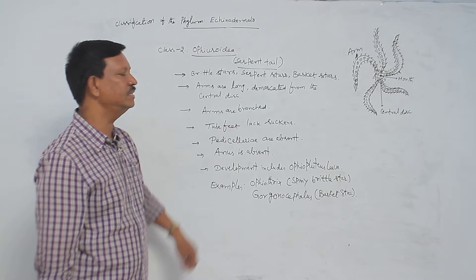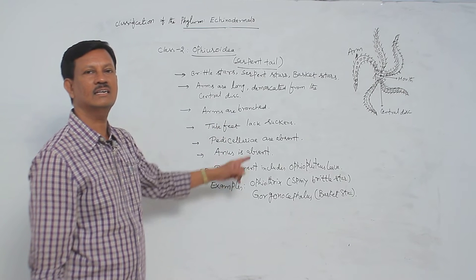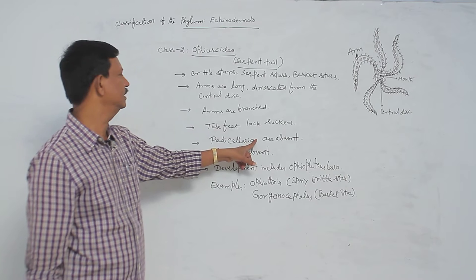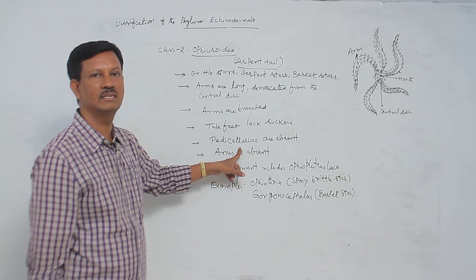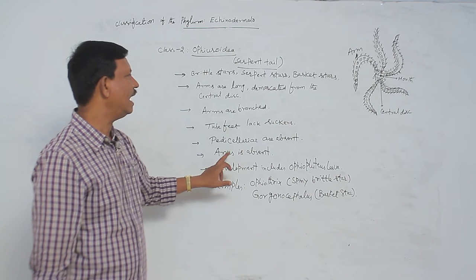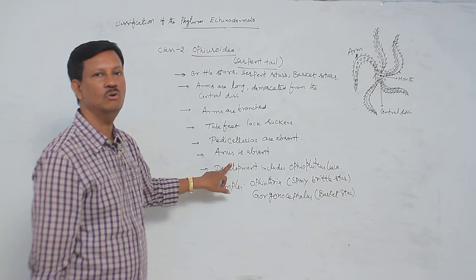And tube feet lack suckers. Suckers are absent in the tube feet. And pedicellariae are absent. No pedicellariae are present in the Ophiuridea. Anus is also absent. There is no anus.